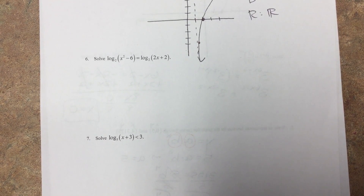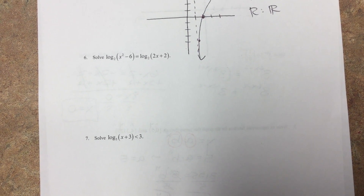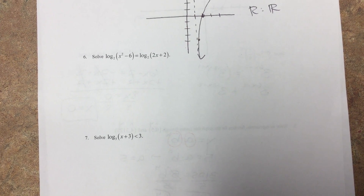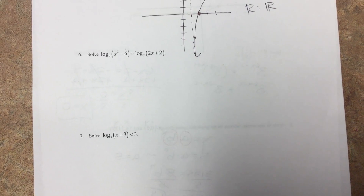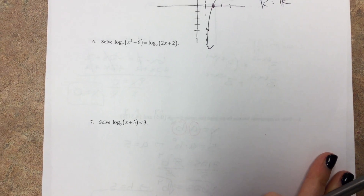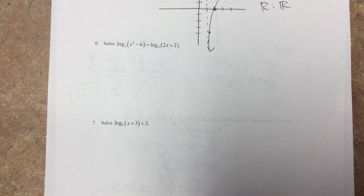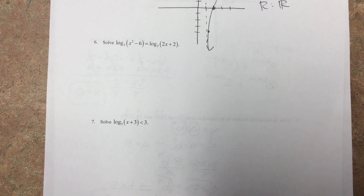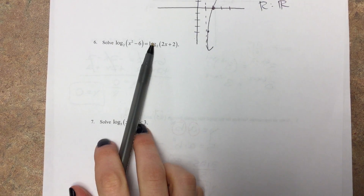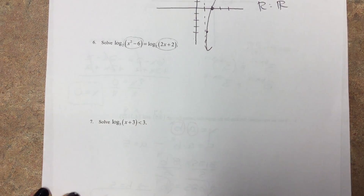Number 6 — a lot of you made up new properties that weren't real. A lot of people distributed the log function, which isn't a thing. You can't distribute functions — those are like words, not numbers. It was actually much simpler. This is really similar to the exponential common base problem on the front: they both have log base two, so you just set the insides equal to each other. That's exactly what you're doing here.